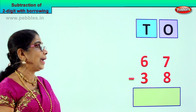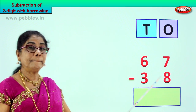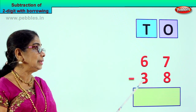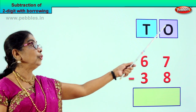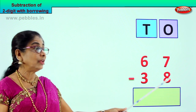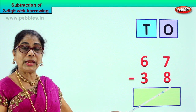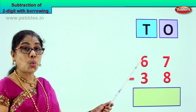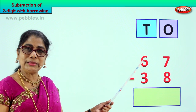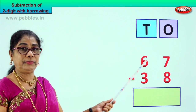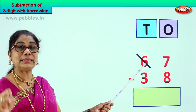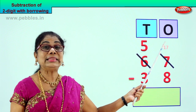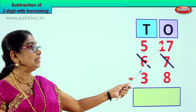Let's take another sum and learn to borrow and then minus. Look at the sum — new sum: you have 67 minus 38. 6 tens, 7 ones, 3 tens, 8 ones. Now let's go to the ones place — you have 7 here and 8 here. 7 is small, 8 is big. You cannot take away 8 from 7. Now we are going to borrow 1 from the tens place. When we take away 1 ten from the 6, it becomes 5. The 1 ten goes into the ones place — 1 ten plus 7 is 17.